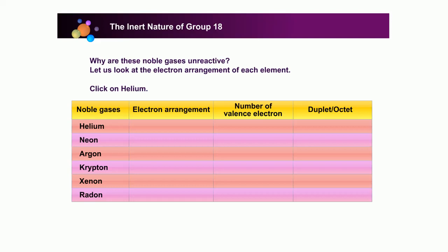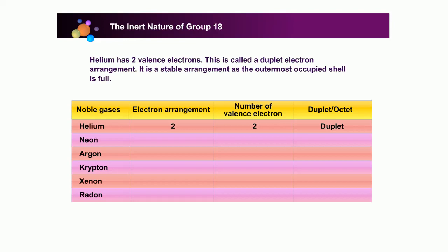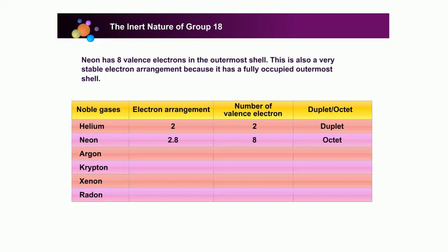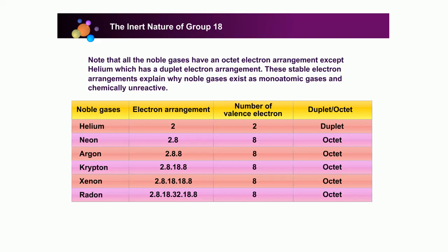Let us look at the electron arrangement of each element. Helium has two valence electrons — this is called a duplet electron arrangement. It is a stable arrangement as the outermost occupied shell is full. Neon has eight valence electrons in the outermost shell, which is also a very stable electron arrangement because it has a fully occupied outermost shell. Note that all the noble gases have an octet electron arrangement except helium, which has a duplet electron arrangement. These stable electron arrangements explain why noble gases exist as monoatomic gases and are chemically unreactive.